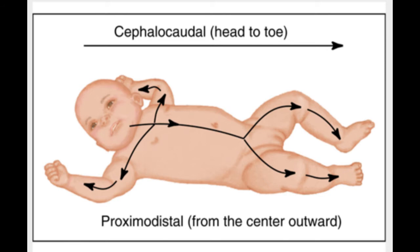Cephalocaudal means head to toe, and the term cephalocaudal development refers to development that happens from head to toe. It is a simple principle, undoubtedly with lots of exceptions, but it simply points out that things often develop earlier when they are closer to the head, as opposed to farther from the head.